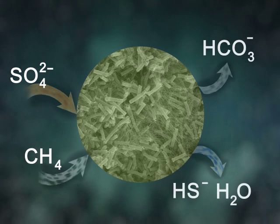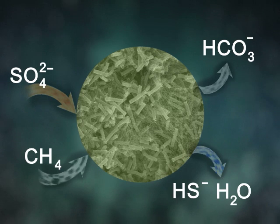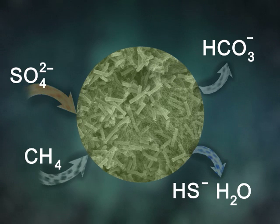In this environment, methane oxidation proceeds like this: sulfate ions and methane being catalyzed to produce bicarbonate ions, hydrogen sulfide ions, and water.